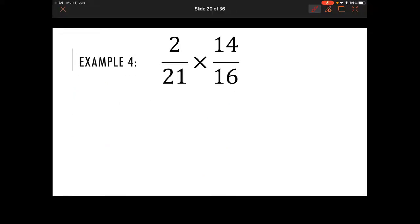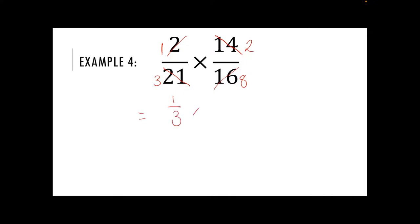For example four, we're going to do exactly the same thing. Two and sixteen are both in my two times table. So they are going to become one and eight. Fourteen and twenty-one are both in my seven times table. So fourteen divided by seven is two and twenty-one divided by seven is three. So that means I'm going to get one third for that first fraction and two over eight for my second fraction.